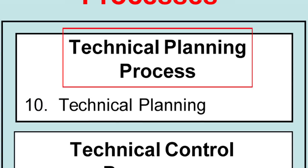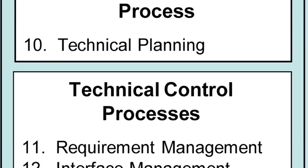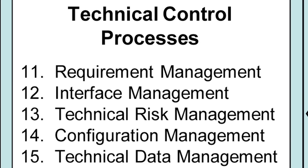The technical planning process, step 10, is where you make sure all schedules are laid out, the technical work is defined, and the team understands how they'll work together. Then technical control processes, steps 11 through 15, include requirements management — ensuring everyone is using the same controlled set of requirements and that requirements don't change without oversight.